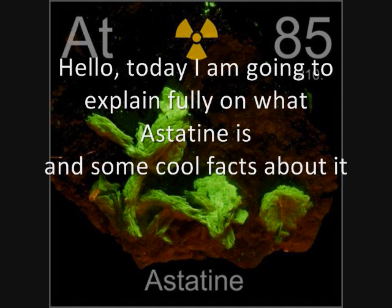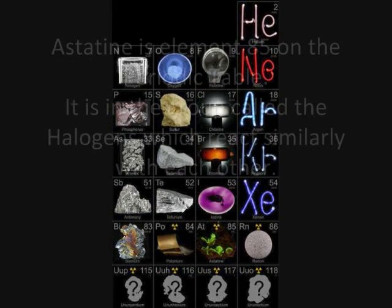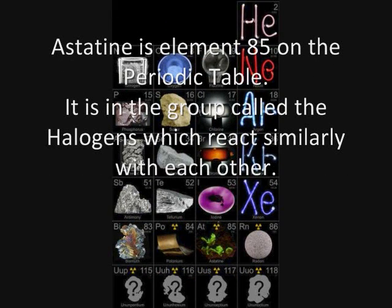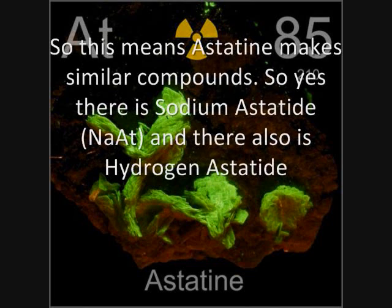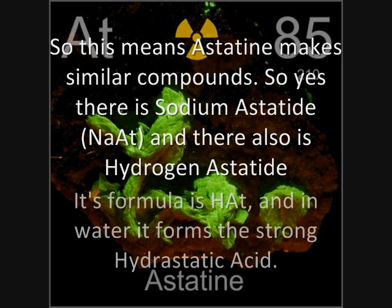Hello, today I'm going to fully explain what astatine is and some cool facts about it. Astatine is element 85 on the periodic table. It is in the group called the halogens, which react similarly with each other. So this means astatine makes similar compounds.